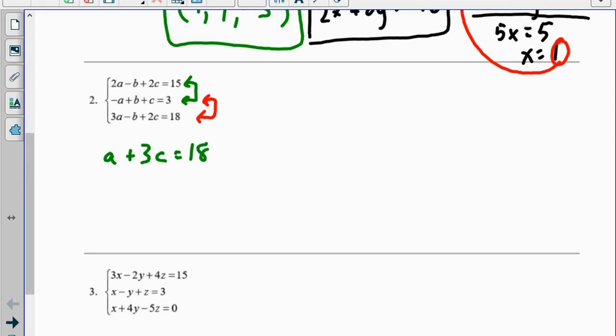Now I'm going to take a look at the red pair. In the red pair, if I add those straight down, I get 2a, the b's cancel, plus 3c equals 21.